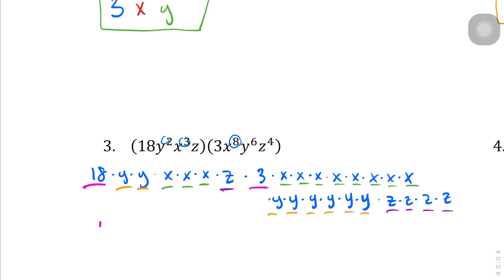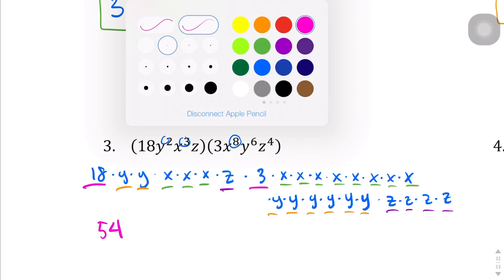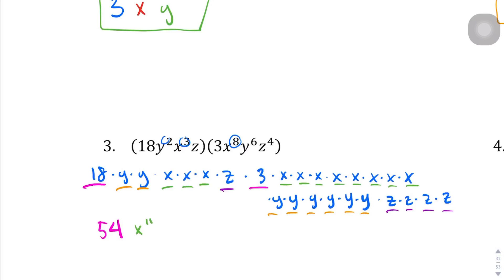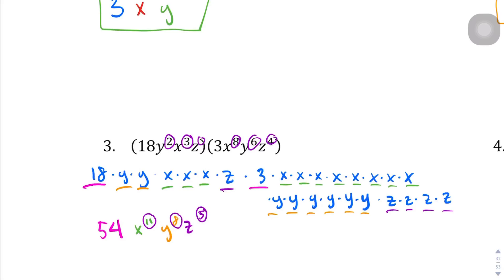18 times 3 is going to become 54, and I counted 11 X's — x to the 11th power. The Y's I counted 8 — y to the 8th power. And z to the 5th power. Now, as you noticed, this took up quite a bit of room. But for eagle-eyed viewers, what you should have noticed is you can just add the exponents. This and this becomes 11, this and this becomes 8, and 1 plus 4 becomes 5. So from here on out, I'm just going to add the exponents of variables with the same bases.